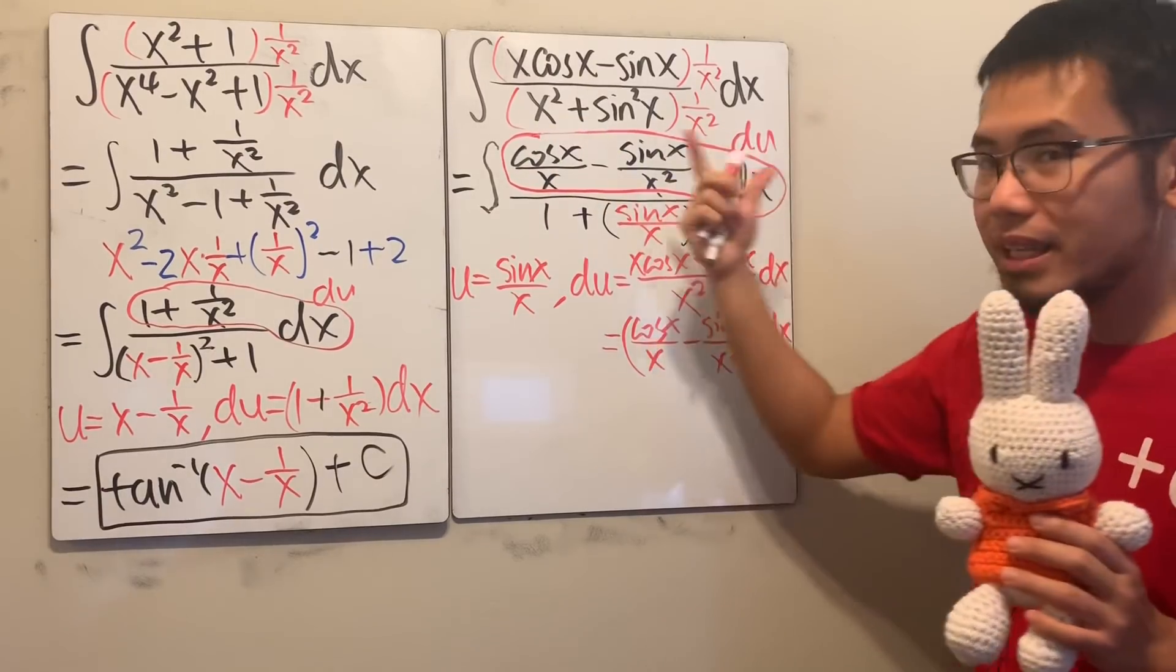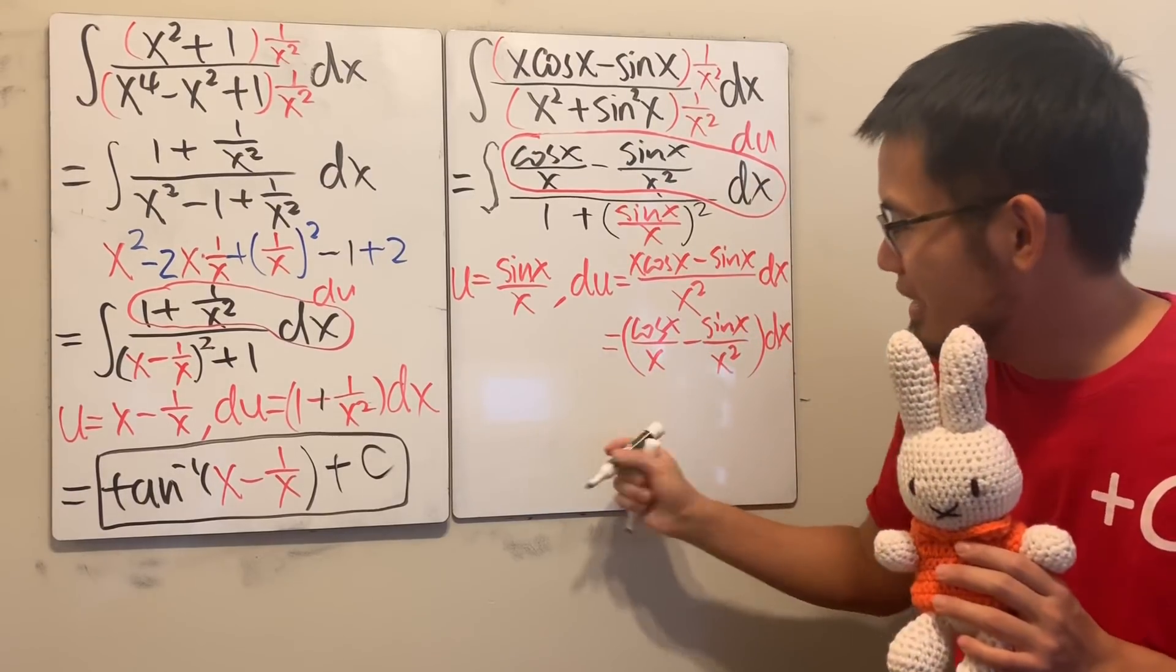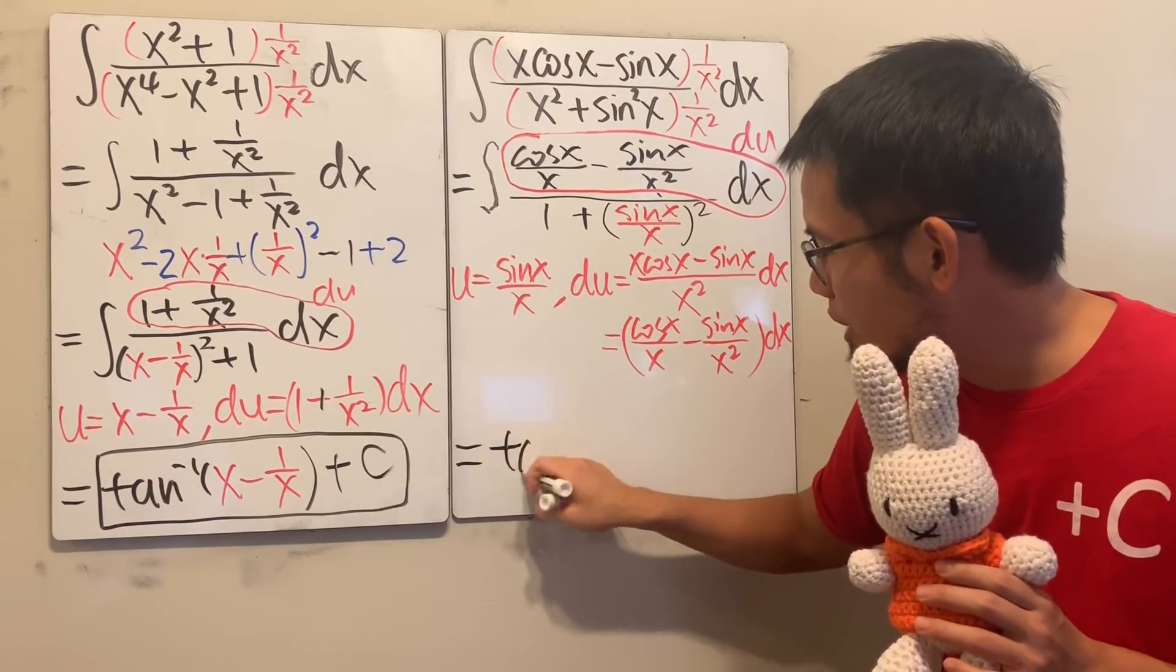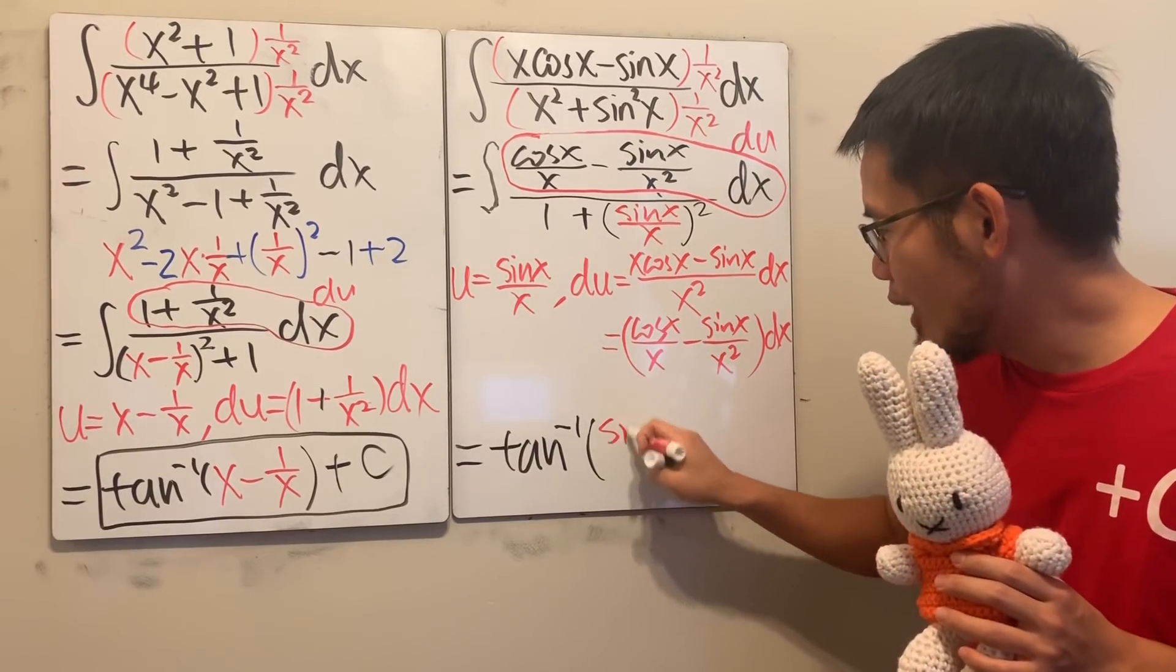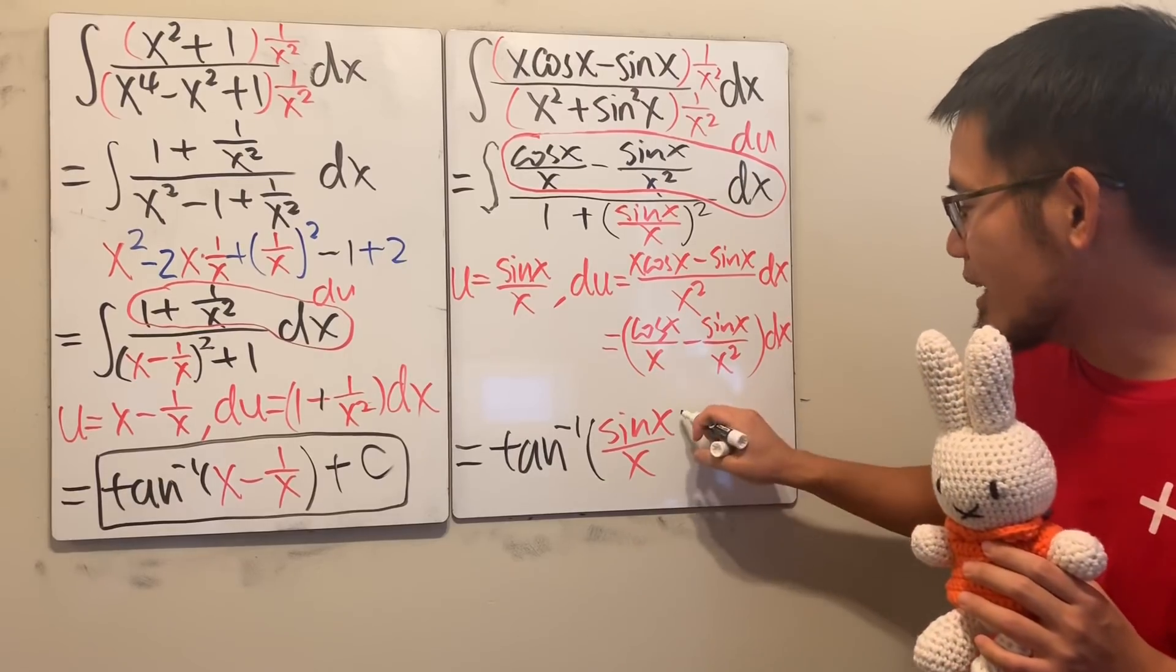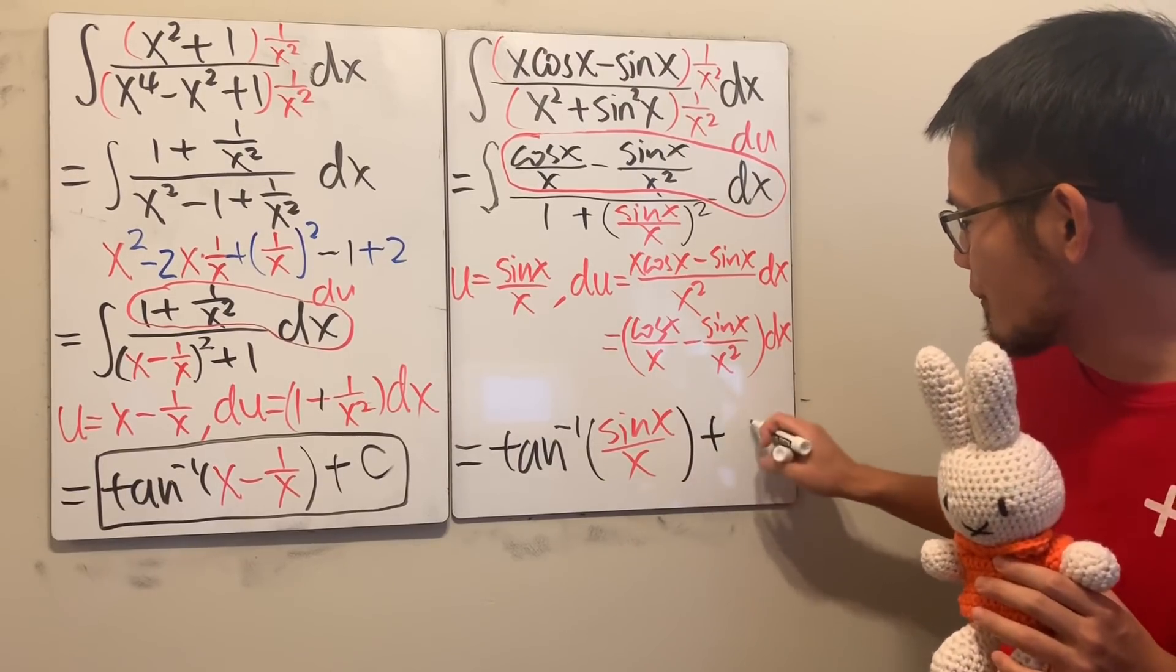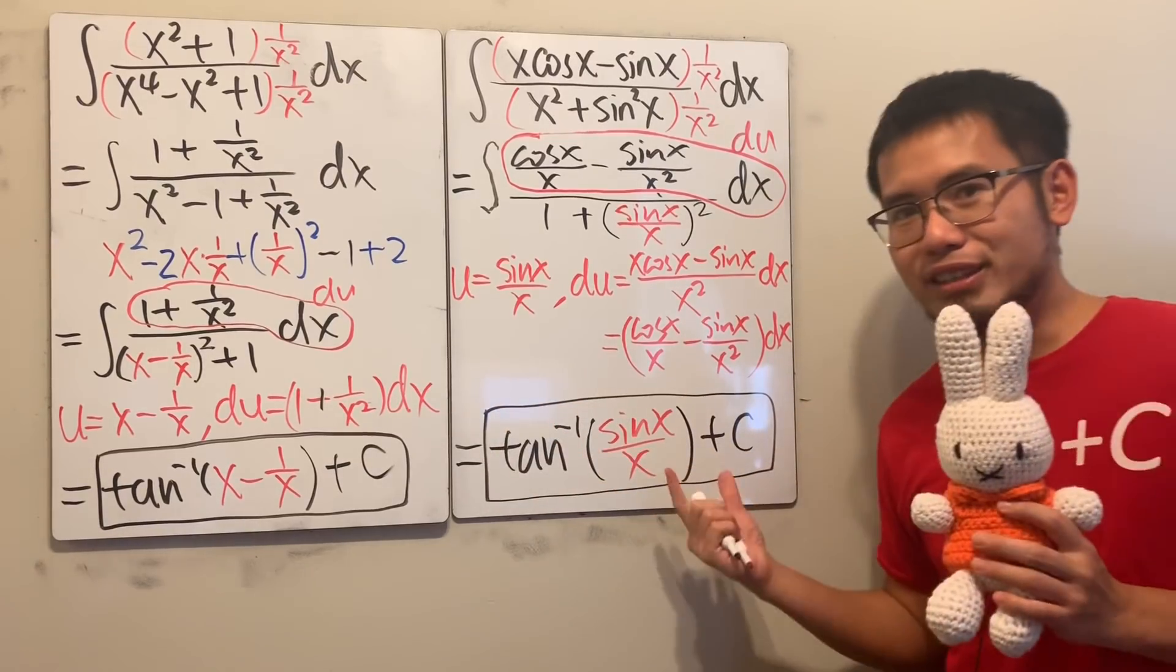So, again, we are just integrating 1 over 1 plus u squared in the u world. And, again, we will end up with inverse tangent of u. But this time the u is sin x over x. That's pretty much it. And we are done. So, I'm just going to close it. And then don't forget the plus c. And this right here is it, right?